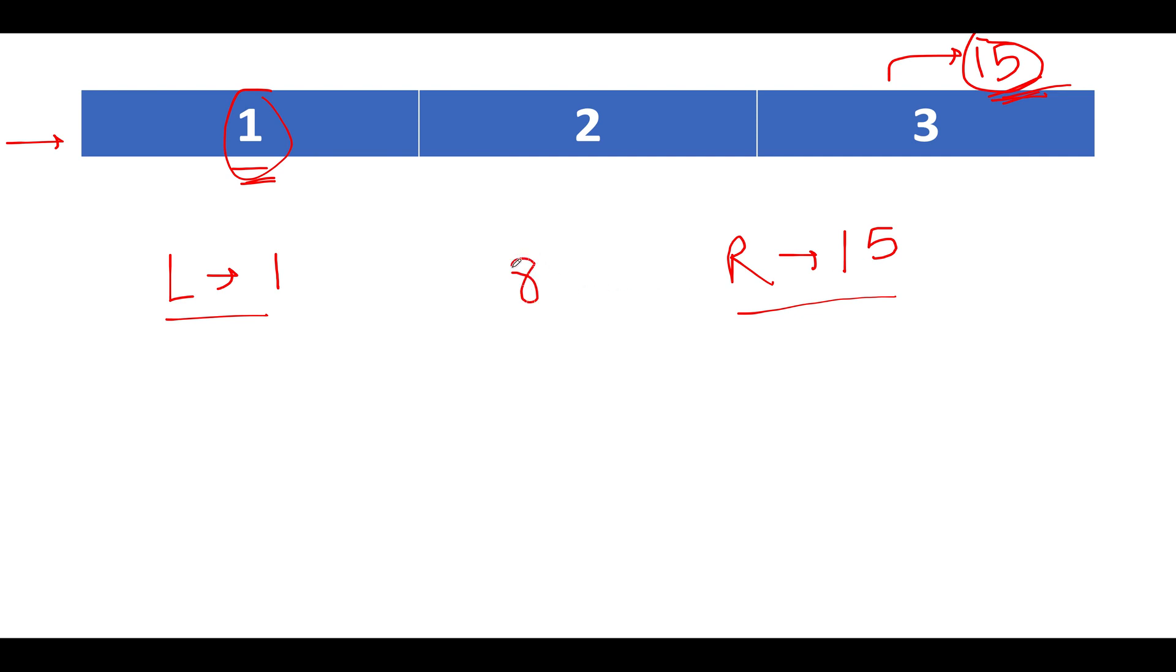So we have taken these two pointers left and right, and what do we do next? We simply identify the mid value. 1 plus 15 by 2 happens to be 8, so mid comes out to be 8. Now we will look out for the total number of trips that could be completed in the time span of 8 units. For that, let's iterate through the entire array and calculate the total number of trips that could be completed in 8 units of time.